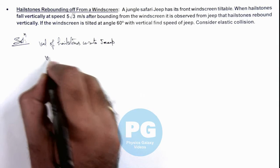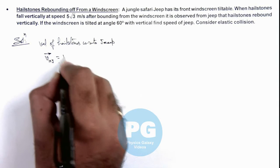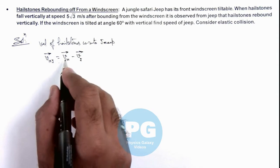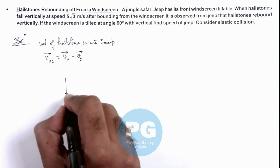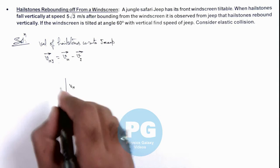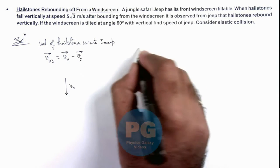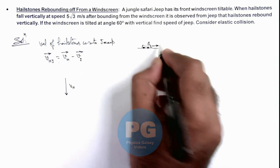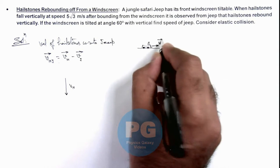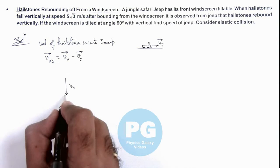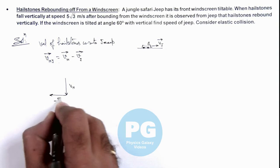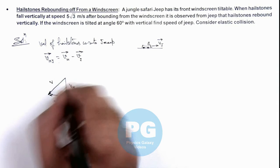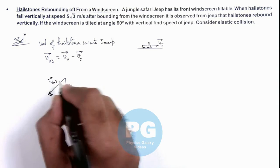The velocity of the hailstone with respect to the jeep equals v_h minus v_g. Since the hailstones are falling vertically, this is v_h. If we consider the jeep is moving toward the right, then minus v_j would be toward the left. This gives the direction in which the hailstones appear to be falling on the jeep, or the velocity with which the hailstones will strike the windscreen of the jeep.